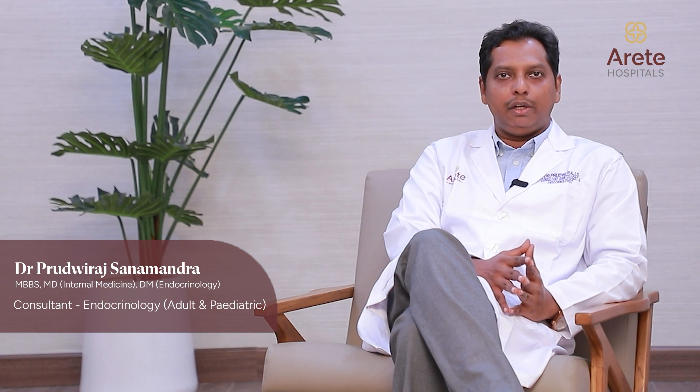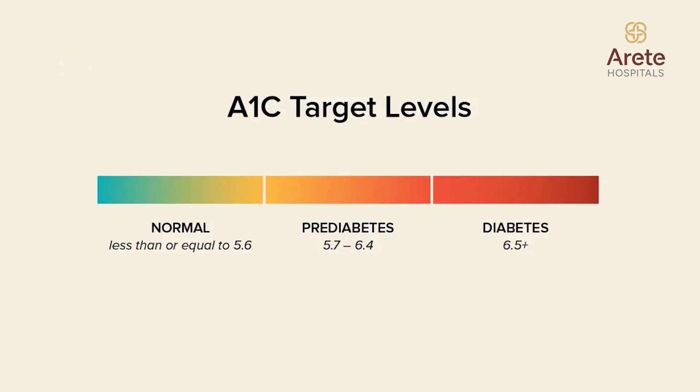What is impaired fasting glucose or impaired glucose tolerance? This is the pre-diabetes condition — IFG or IGT — which can progress into type 2 diabetes in the future. If fasting blood sugar is between 100 and 126 mg/dL, or two-hour post-glucose sugar is between 140 and 200 mg/dL, or HbA1c is between 5.7 and 6.4%, then you are considered pre-diabetic.